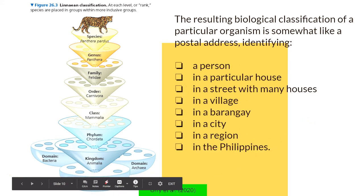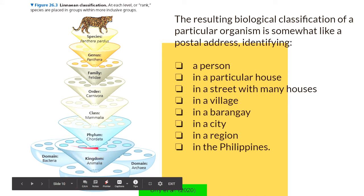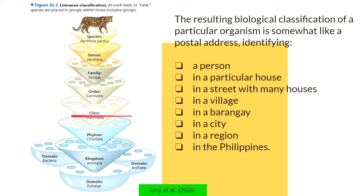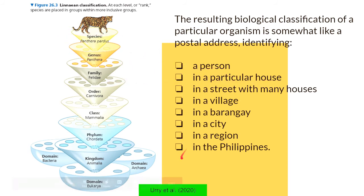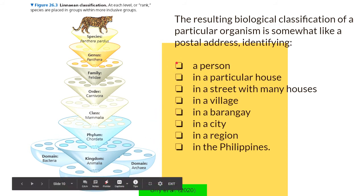The largest, most general taxonomic rank is domain Eukarya — that's the country. The next smaller rank is the kingdom — that's the region. Then phylum — the city. Within each rank there are smaller groups within it: within domain Eukarya there are other kingdoms, within kingdom there are other phyla. Next is class — that's the barangay. Then order — the village. Family — the street. Genus — the actual house. And species — the specific person. As you go higher in rank, the group becomes smaller and more specific.